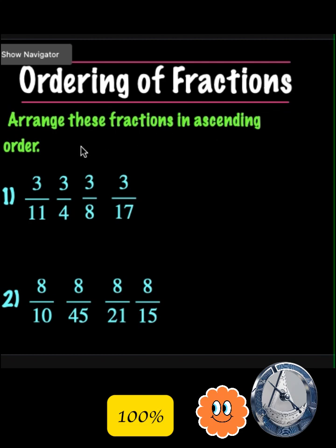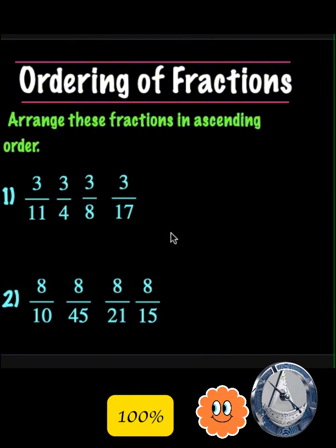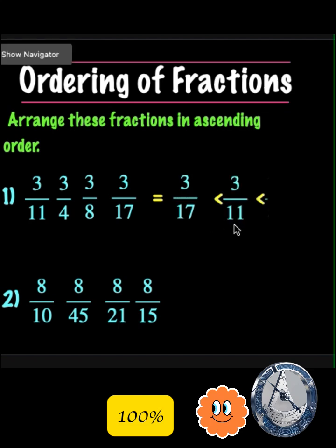Arrange this fraction in ascending order. In ascending order, we start from the smallest fraction and arrange sequentially to the biggest fraction. Here, the numerators are 3. So 3 over 17 is the smallest fraction, followed by 3 over 11, then 3 over 8, and the biggest fraction is 3 over 4. Therefore: 3/17 < 3/11 < 3/8 < 3/4.